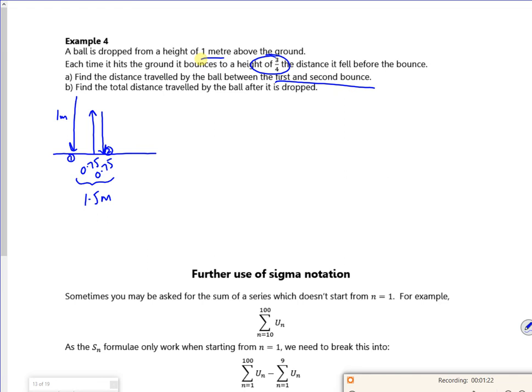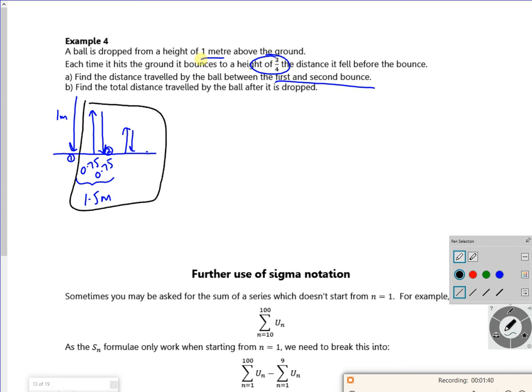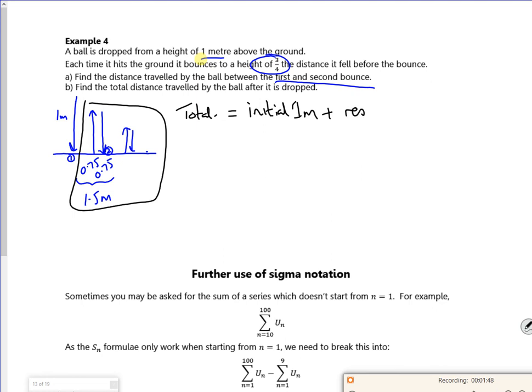So then, it says find the total distance travelled after it drops. So eventually, it's just going to drop down, isn't it? So it gets down and it's sat there. So what I'm going to do is, I've got that 1 from the initial bounce, and I'm going to think about this bit on its own. So the total distance is the initial 1 meter plus the rest of it.